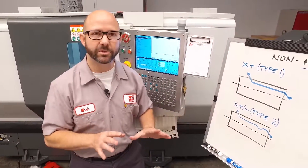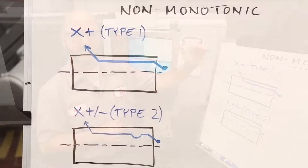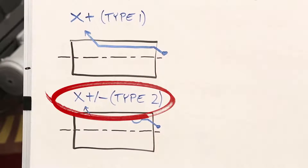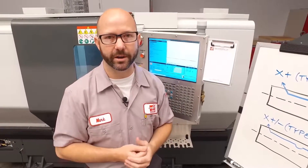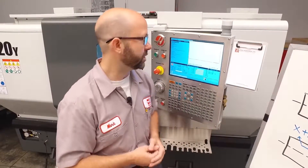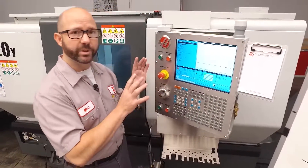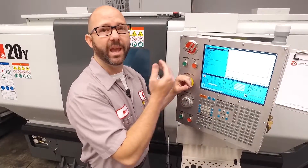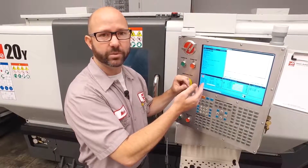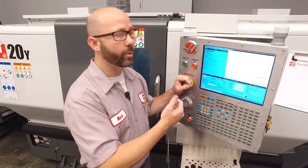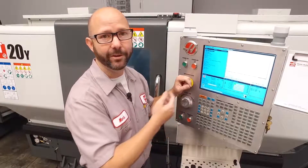There might be a few different causes of this. We might be using the wrong type of cycle — we might be using a Type 1 instead of a Type 2. Or we might just have programmed the part incorrectly, trying to tell the machine to do some impossible feature. So how do we see what's going on with our program if we can't run graphics? We're getting alarms, which is stopping the program before we can see anything useful.